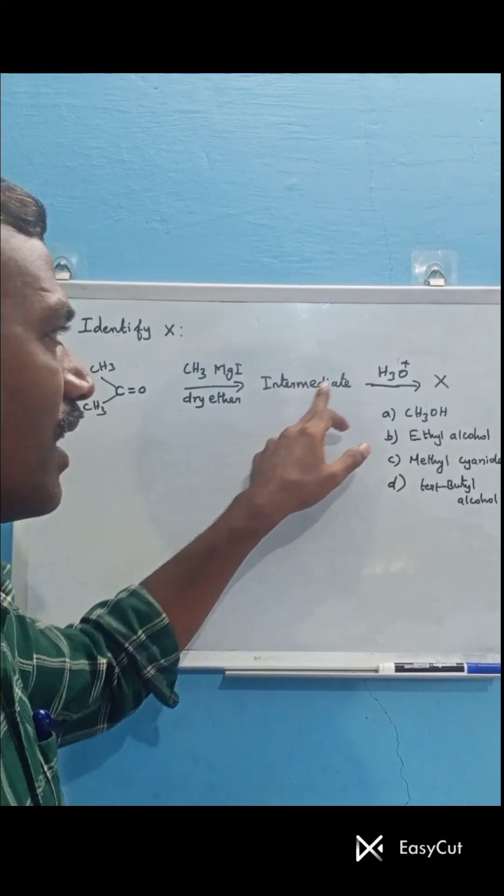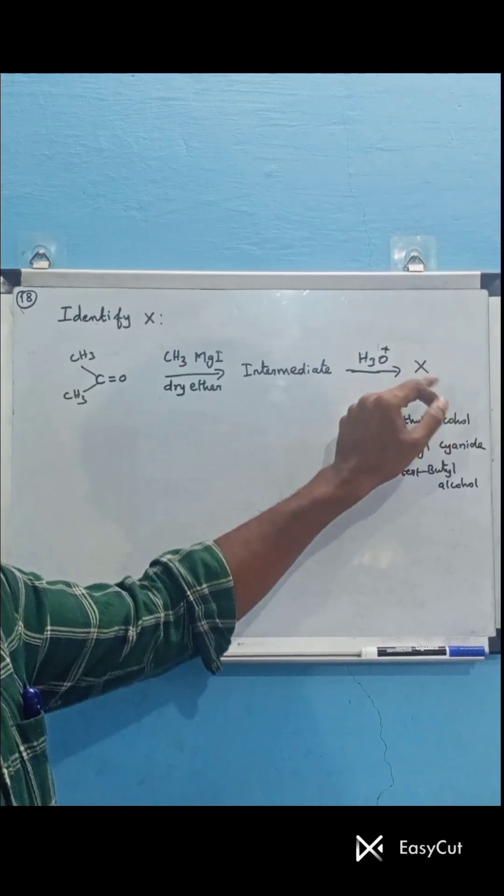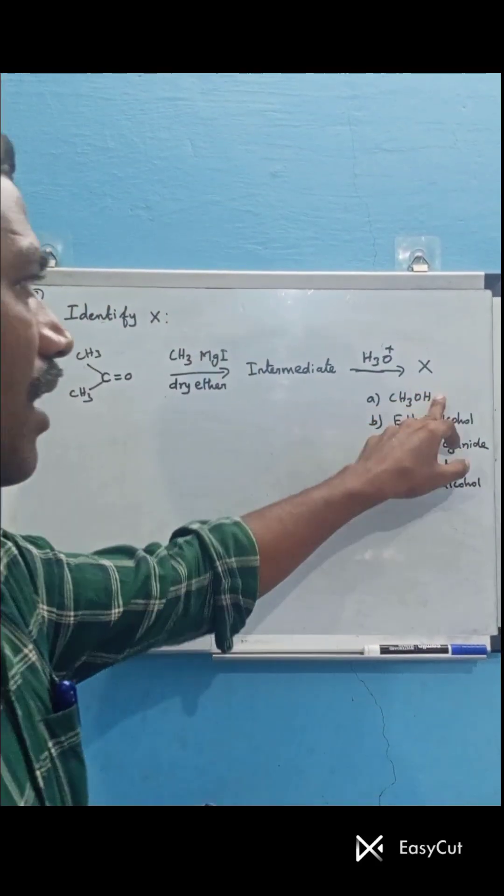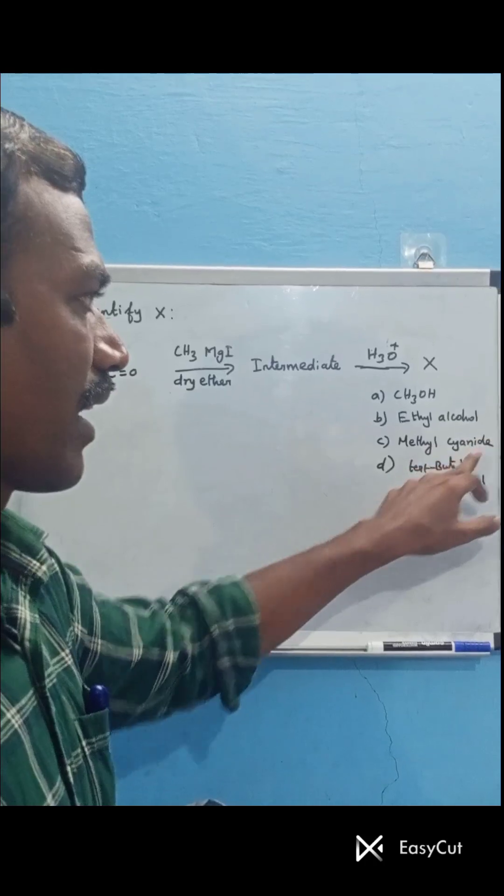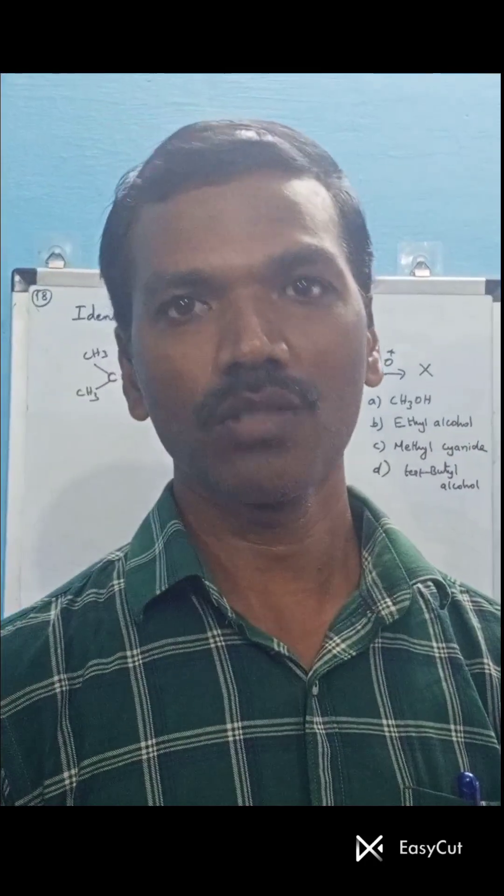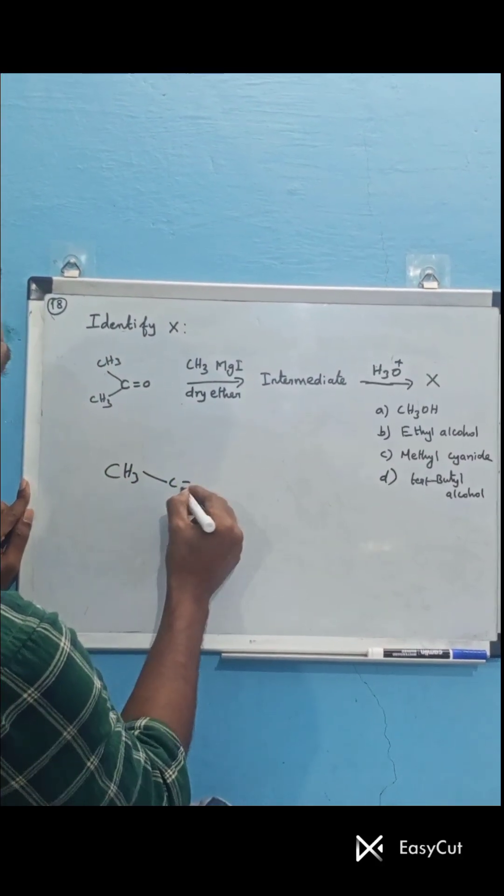This forms an intermediate. The intermediate upon hydrolysis forms X. We have to find out X. The options are methanol, ethyl alcohol, methyl cyanide, and tertiary butyl alcohol.